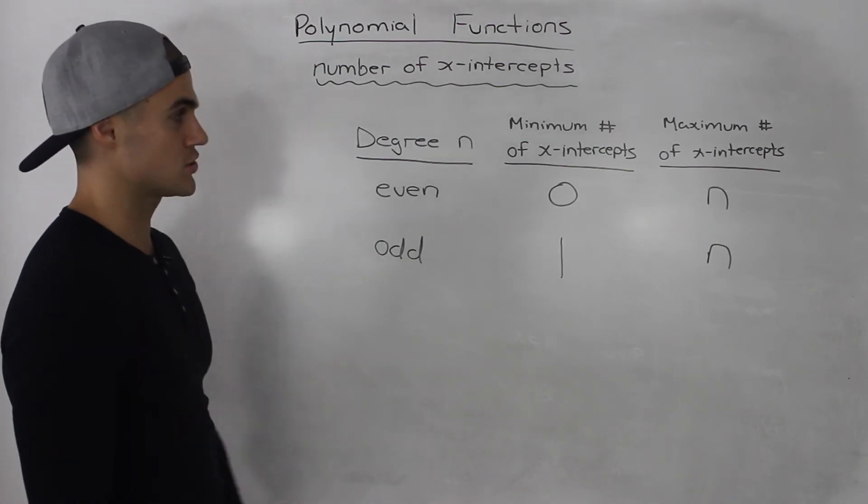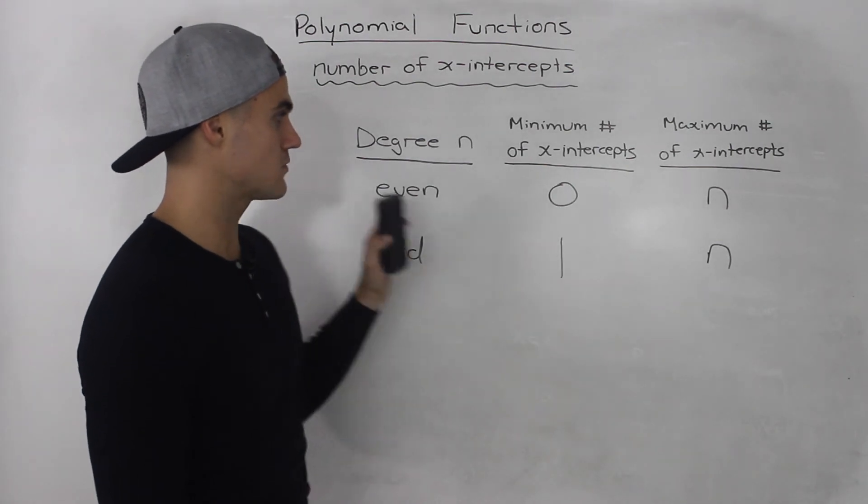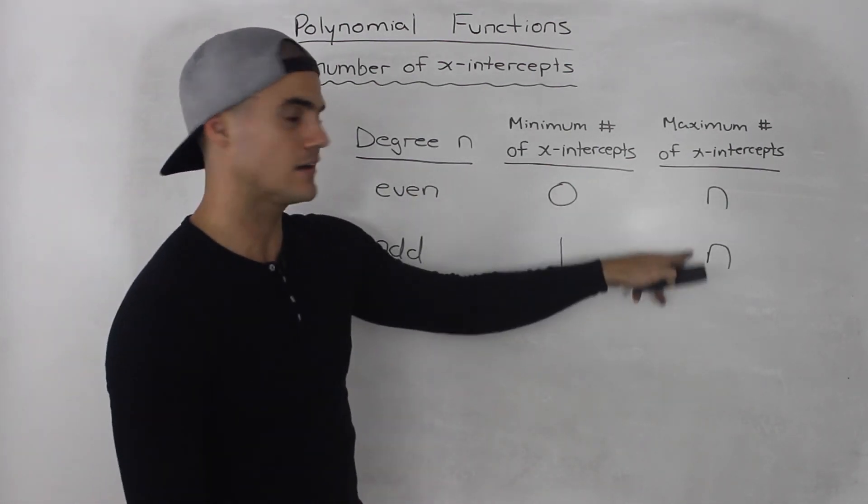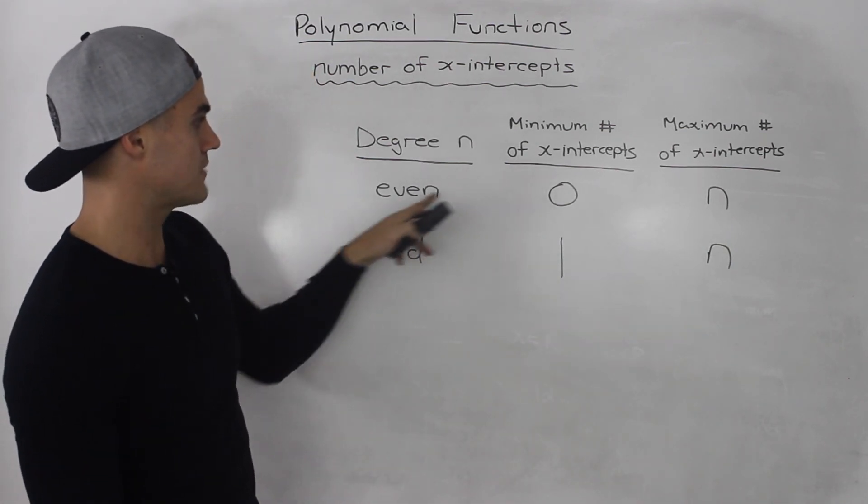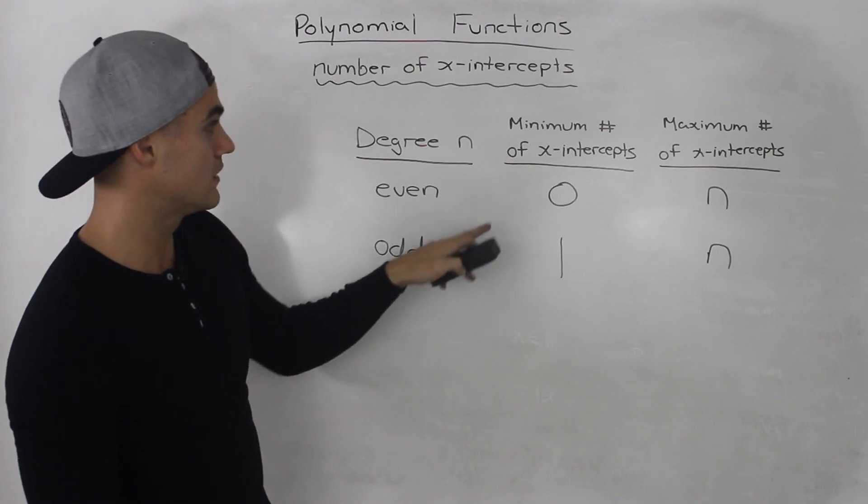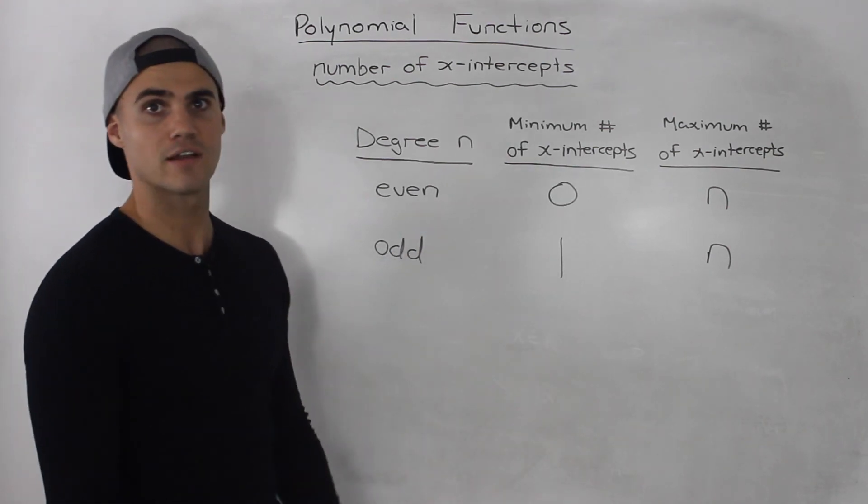That's the relation. The maximum number of x-intercepts, no matter what the polynomial function is, is always equal to n, its degree. The minimum number of x-intercepts, if it's even, could be 0. If it's odd, it has to have at least 1.